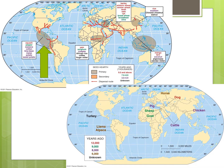Lastly, the Americas. Maize, or corn, as well as tomatoes, squash, and several varieties of bean were first domesticated in what is now Central Mexico, while potatoes were domesticated in the Northern Andes of modern Peru. Domesticated animals of the Americas included the llama, alpaca, guinea pig, and turkey.